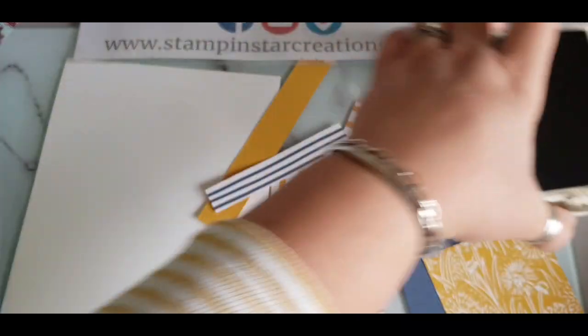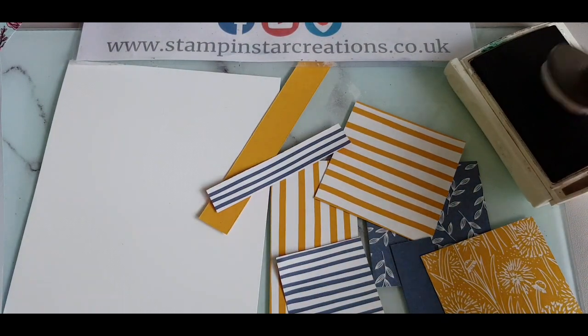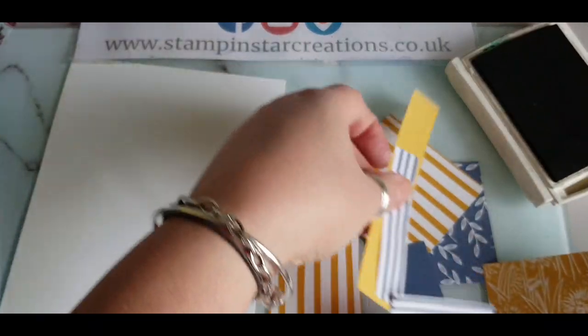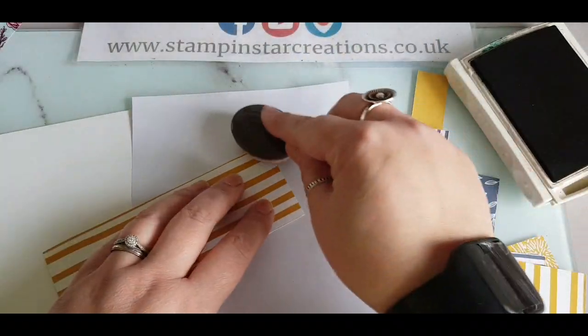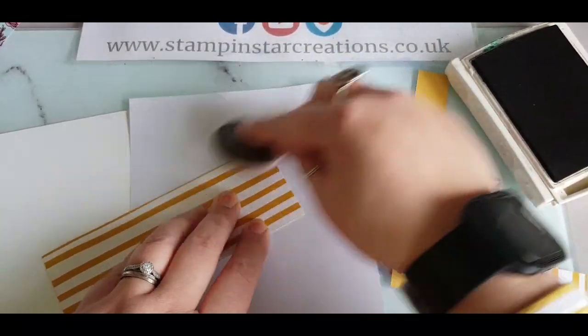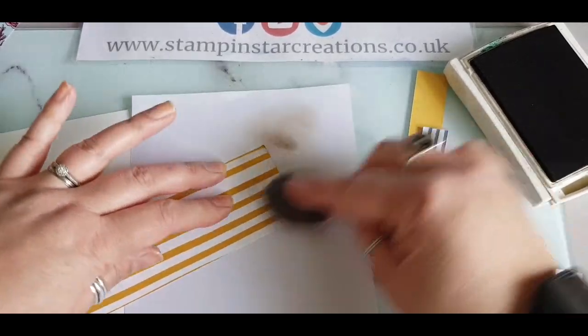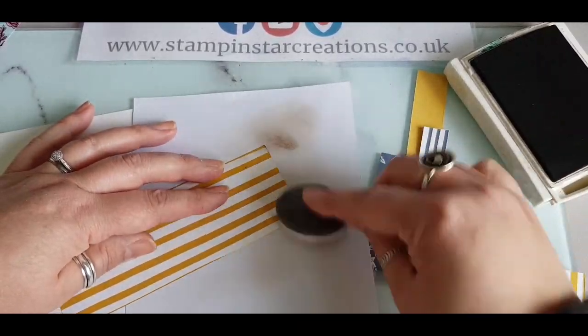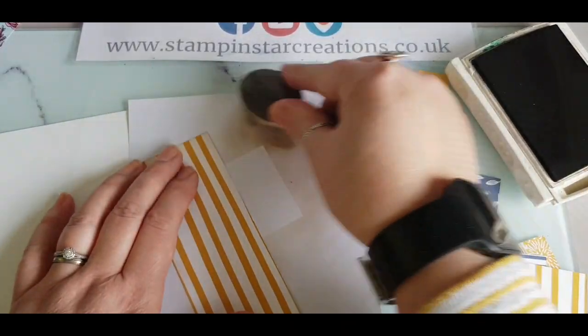I'm using Soft Suede with my blending brush because I just wanted to soften the edges of these pieces of paper. Just going around the edges to create a slightly vintage look and to take away any starkness from the white.